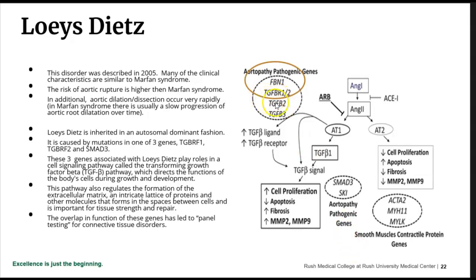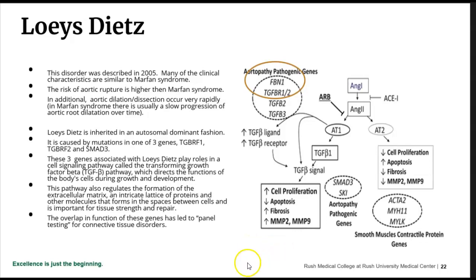TGF-BR1 and TGF-BR2 interact with fibrillin in the TGF ligand receptor pathway, and SMAD3 is also part of this system. When this whole system isn't working right, we have cell proliferation, decreased cell death, and fibrosis. These pathways regulate the formation of the extracellular matrix and structural proteins, and when they're not functioning correctly it results in weakness of the connective tissue.